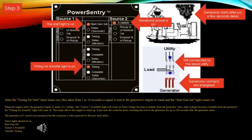Step three: after the timing-for-start timer times out — this takes from one to ten seconds — a signal is sent to the generator's engine to crank, and the gen start light comes on. When the engine starts, the generator begins to make AC voltage. The source two available light will come on when voltage becomes available from the generator. After voltage becomes available from the generator, the timing for transfer light will come on. This timer allows the engine to warm up a bit, allowing oil to get up on the crankshaft so you're not throwing a load on a dry shaft.